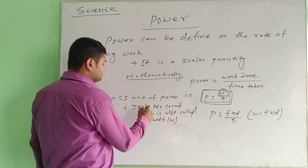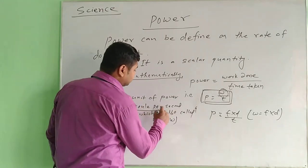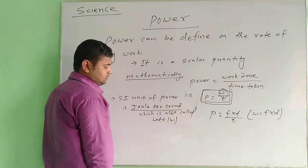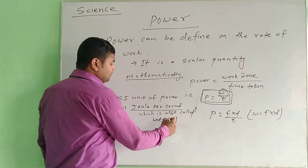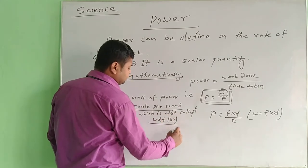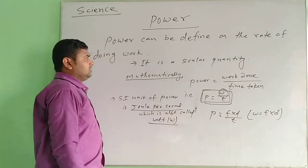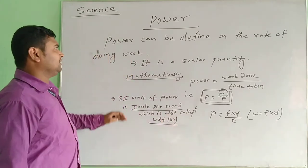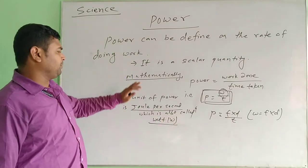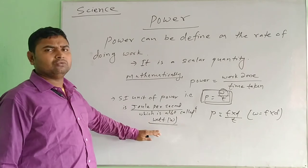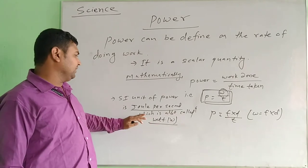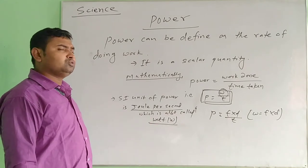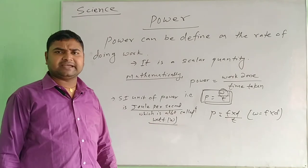The SI unit of power is Joule per second, or Watt. The SI unit of power is Watt. We can also write it as Joule per second.